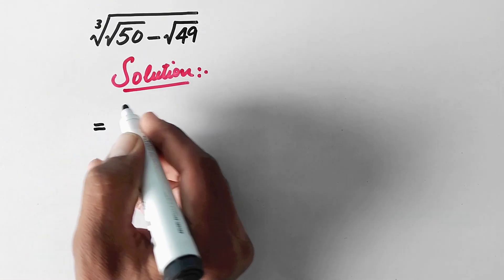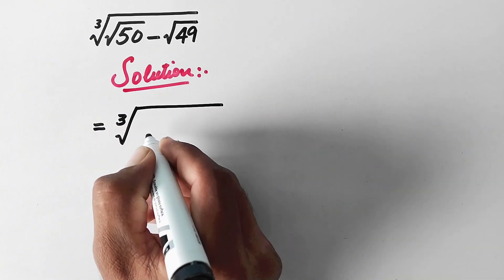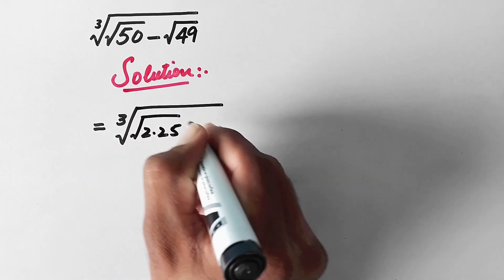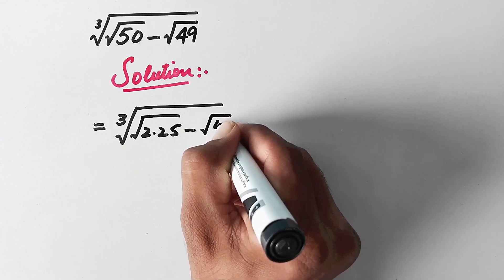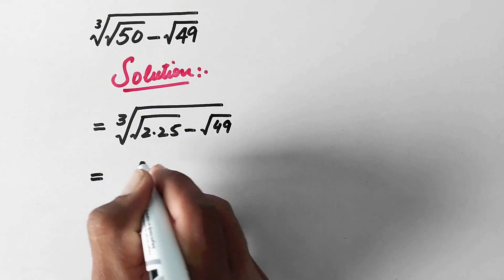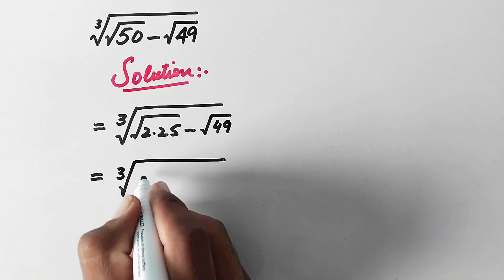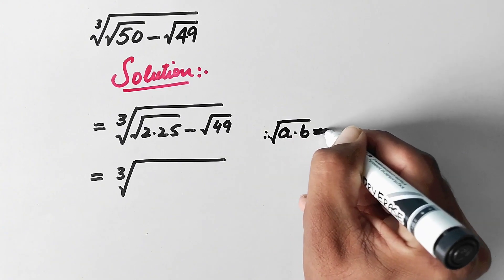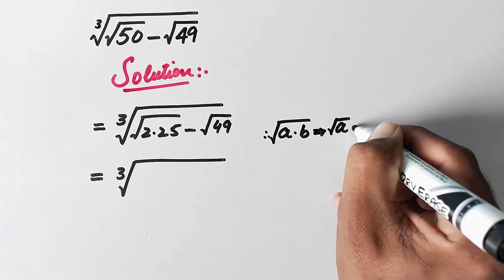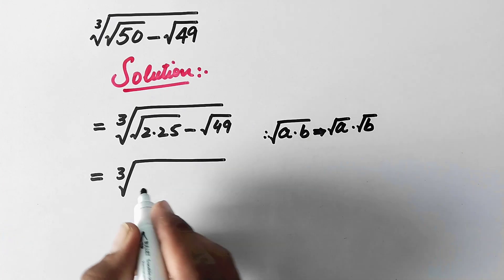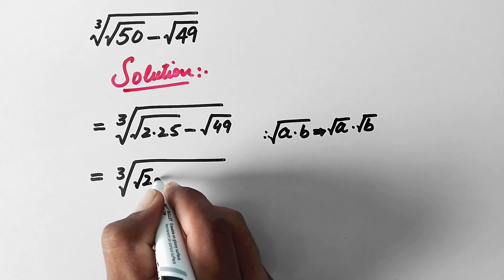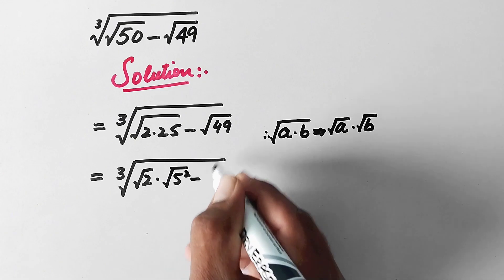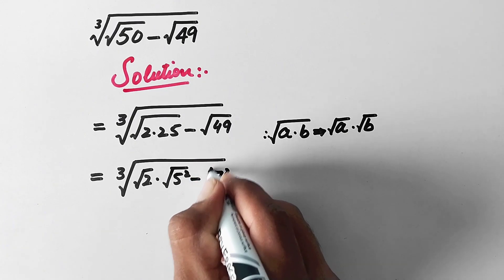In the first step, we will write cube root of square root of 50 as cube root of square root of 2 times 25, minus square root of 49. As we know that square root of a times b can also be written as square root a times square root b. So here we write square root 2 times square root 25, which is 5 squared under root, minus square root of 49, which is 7 squared under root.